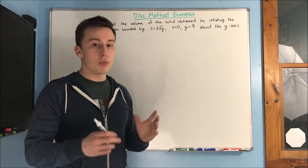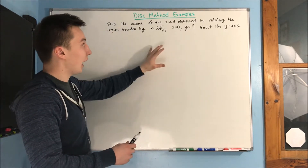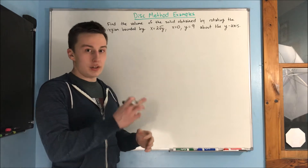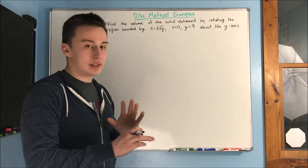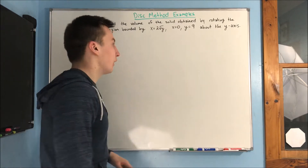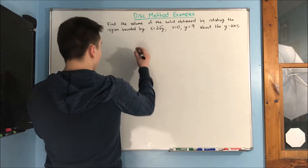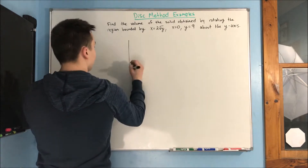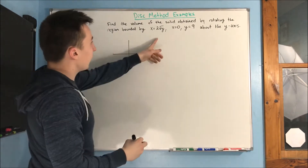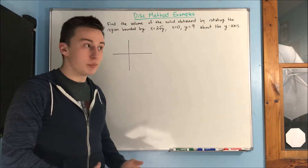A great first step is to draw out what you actually have for a region and show your rotation — it makes things 100 times easier. So if we are actually going to draw this out, what does x equals 2 rad y look like?